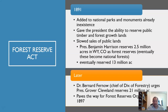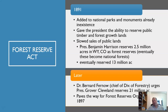Bernhard Fernow became the Division of Forestry chief and had President Grover Cleveland reserve 21 million more acres, bringing the total to 34 million acres of national forest. This led to the Forest Reserve Organic Act of 1897.